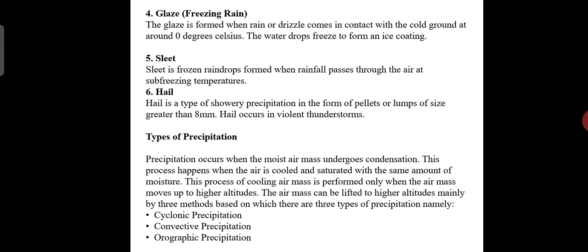Next is sleet. Sleet is frozen raindrops formed when rainfall passes through air at sub-freezing temperature. Next is hail. Hail is a type of showery precipitation in the form of pellets or lumps of a size greater than 8 mm. Hail occurs in violent thunderstorms.